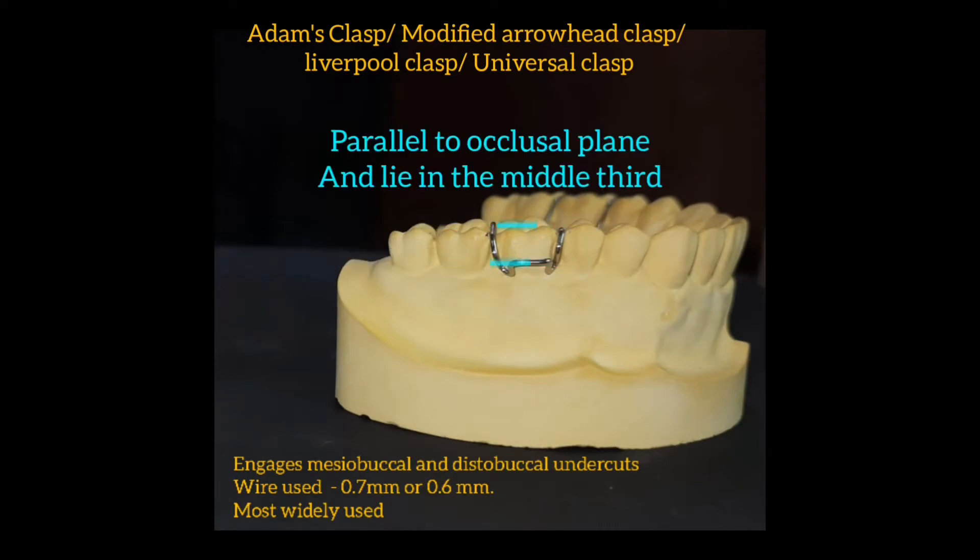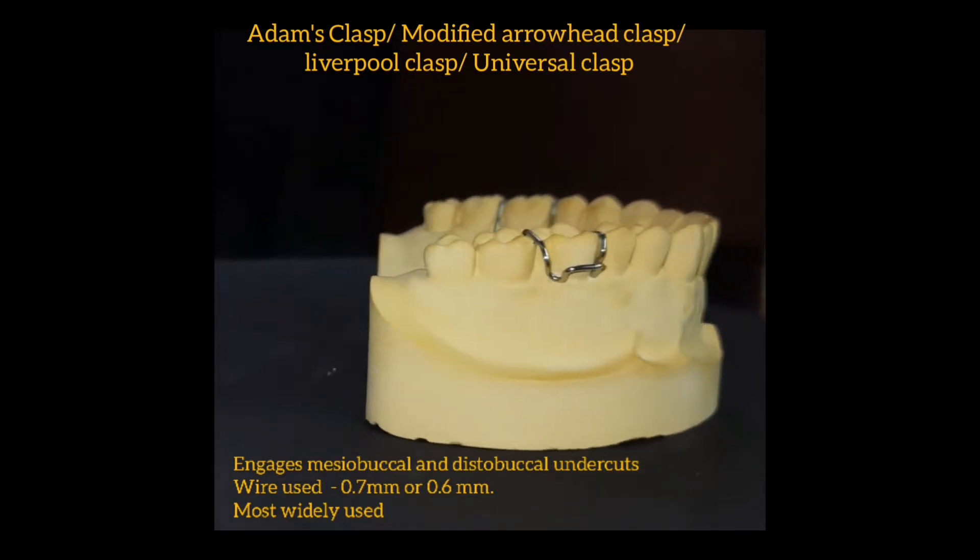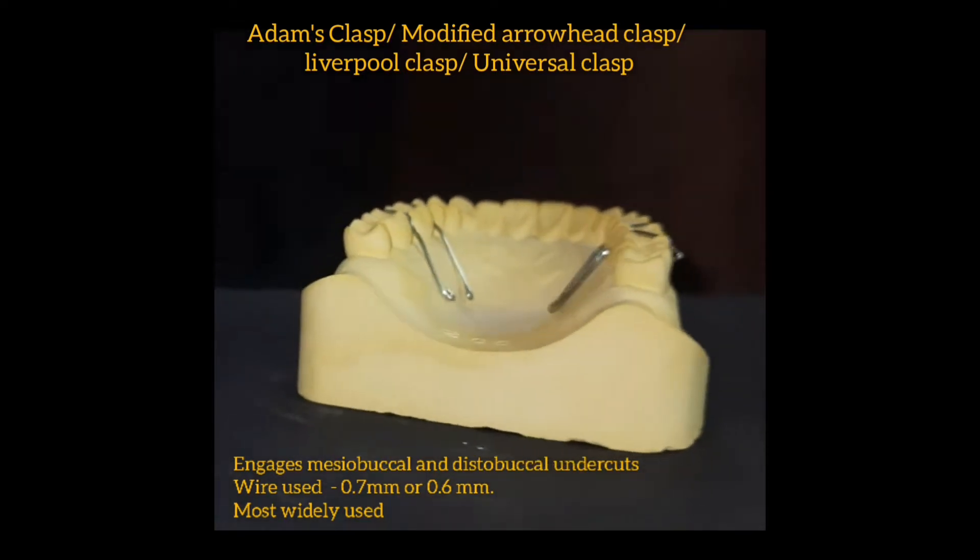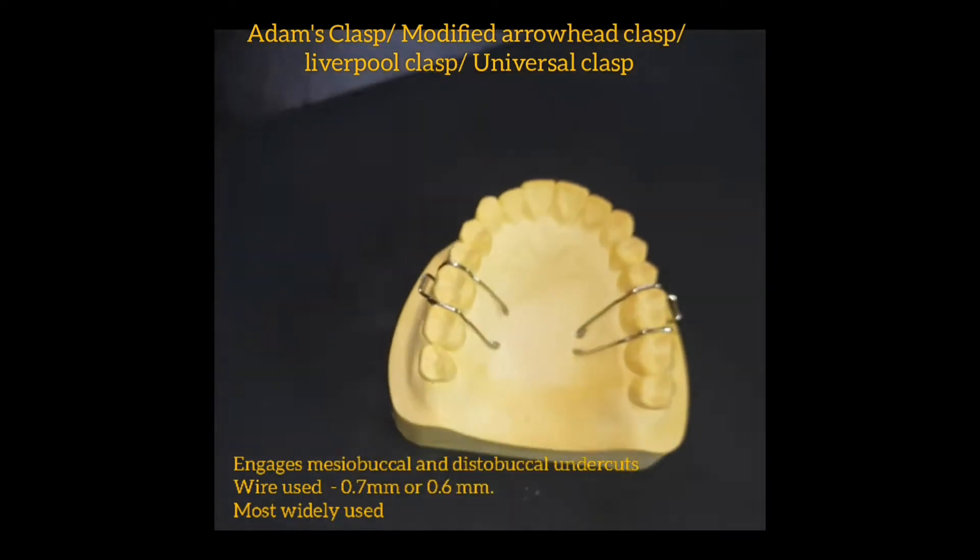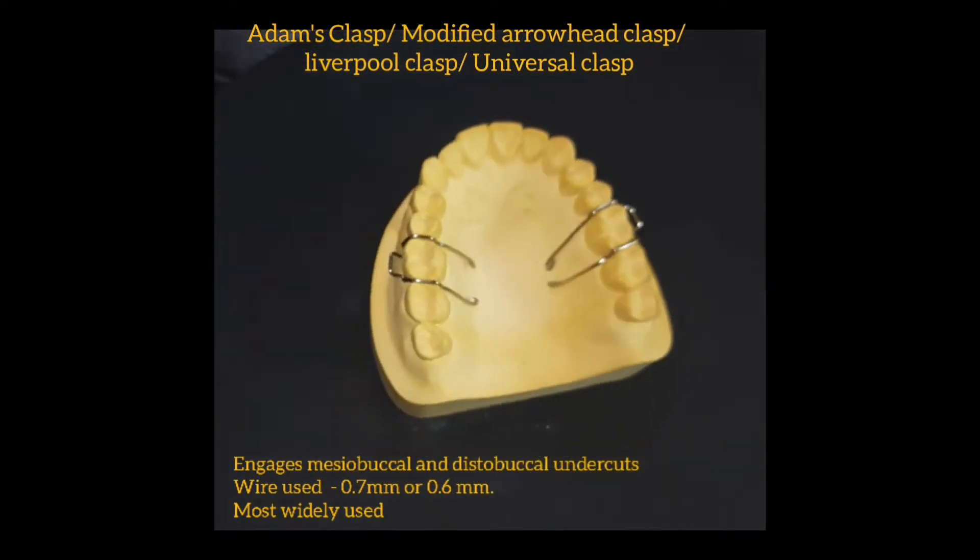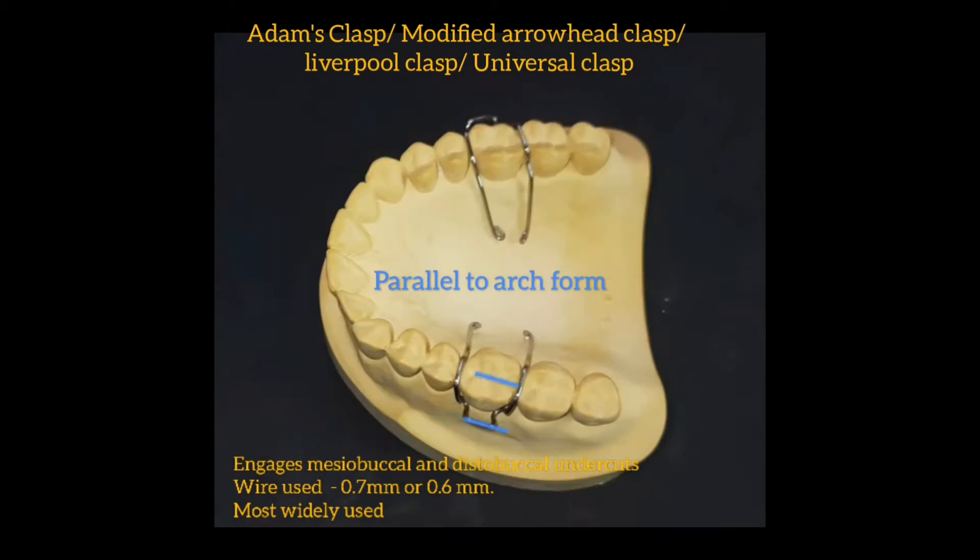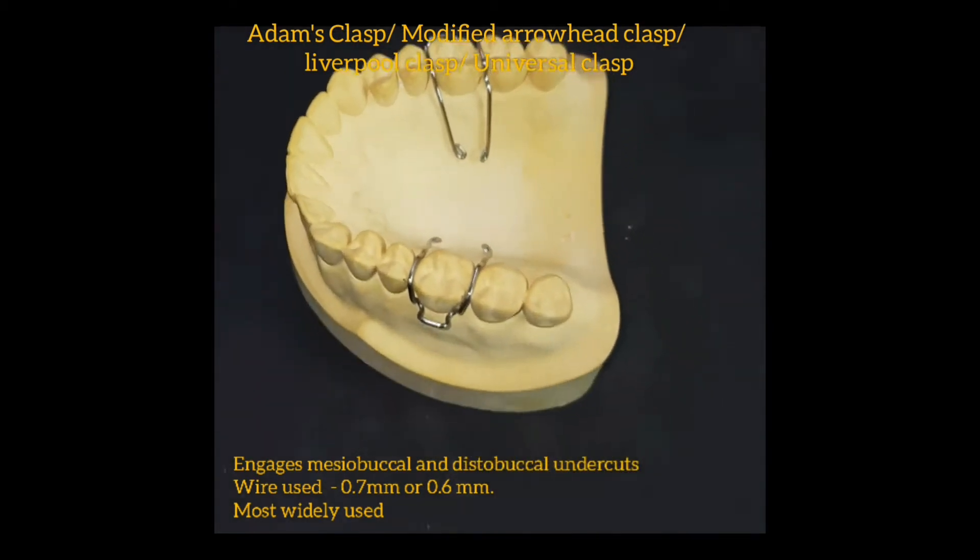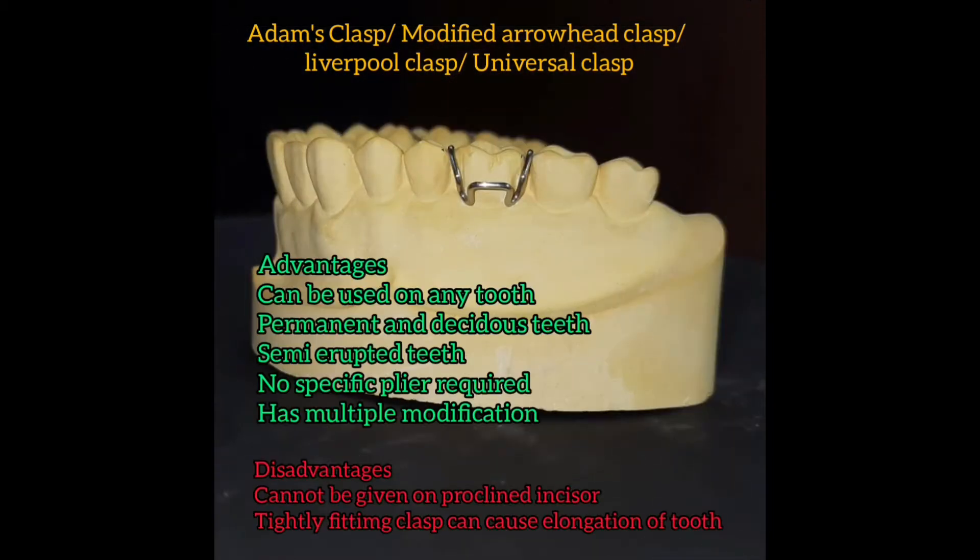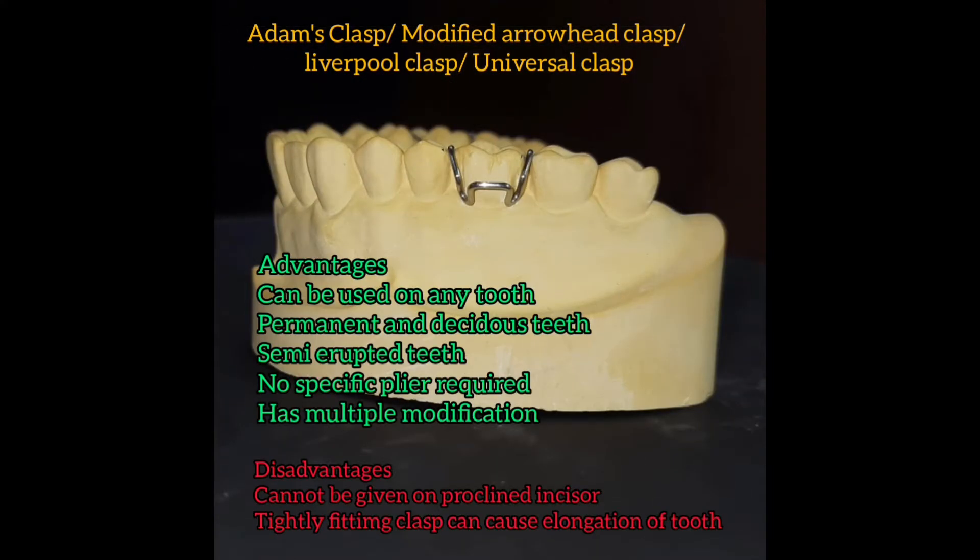The bridge is parallel to the occlusal plane and lies in the middle of the middle third. When we see occlusally both the mesial and the distal wire pass over and end over the hard palate and the bridge is also parallel to the arch form. The advantage of Adam's clasp is that it has a wide variety of usage and it also has multiple modifications as well.